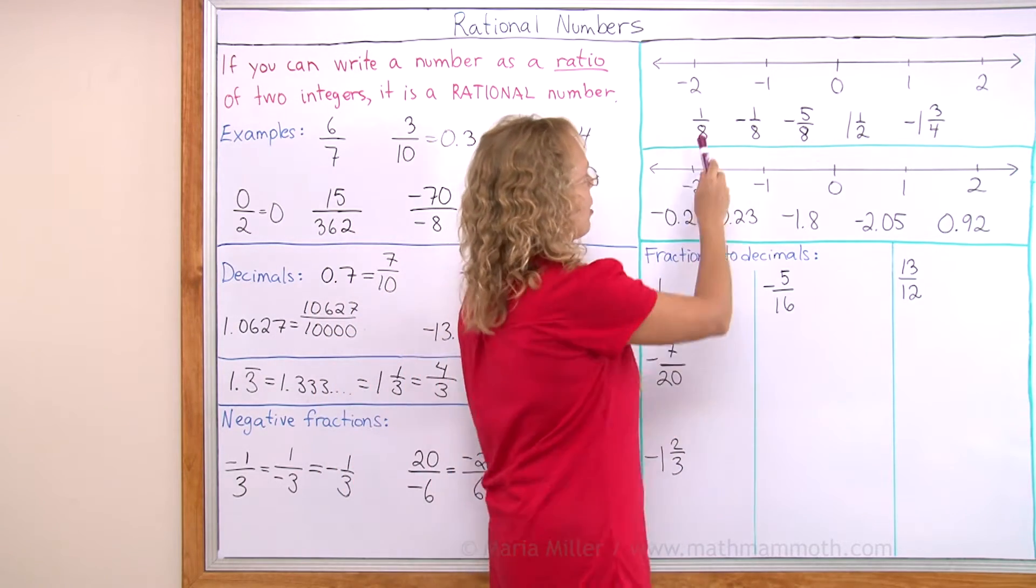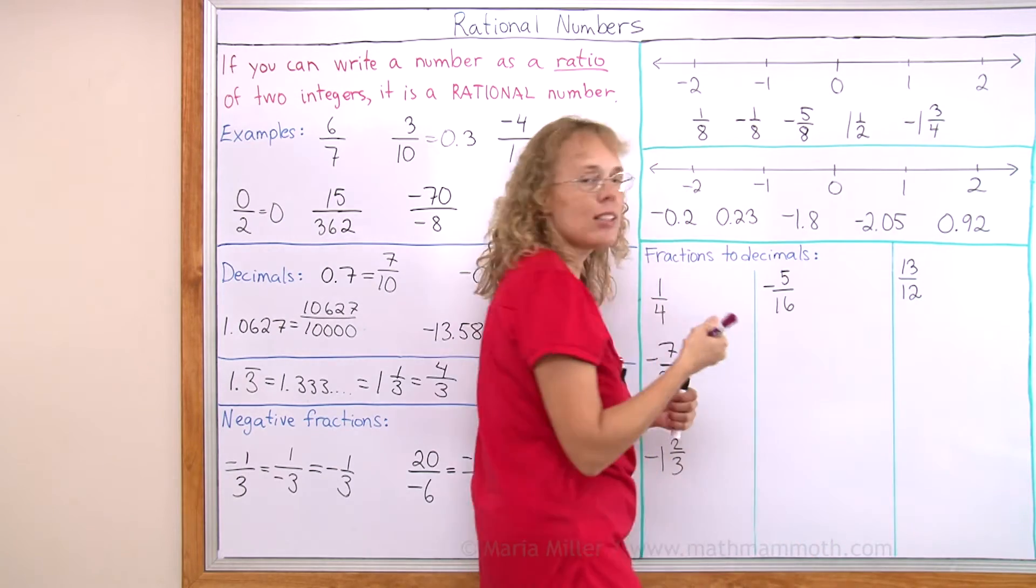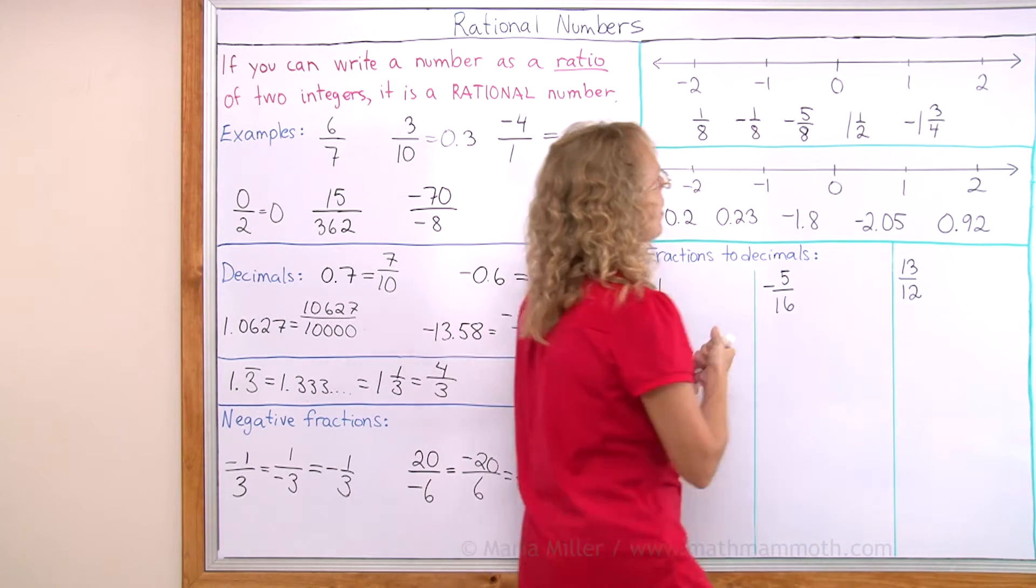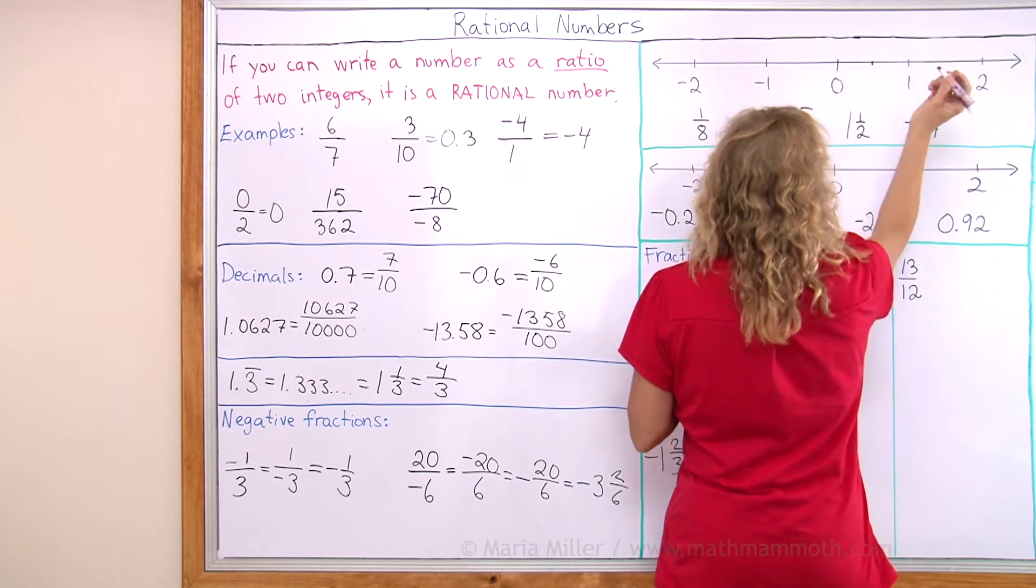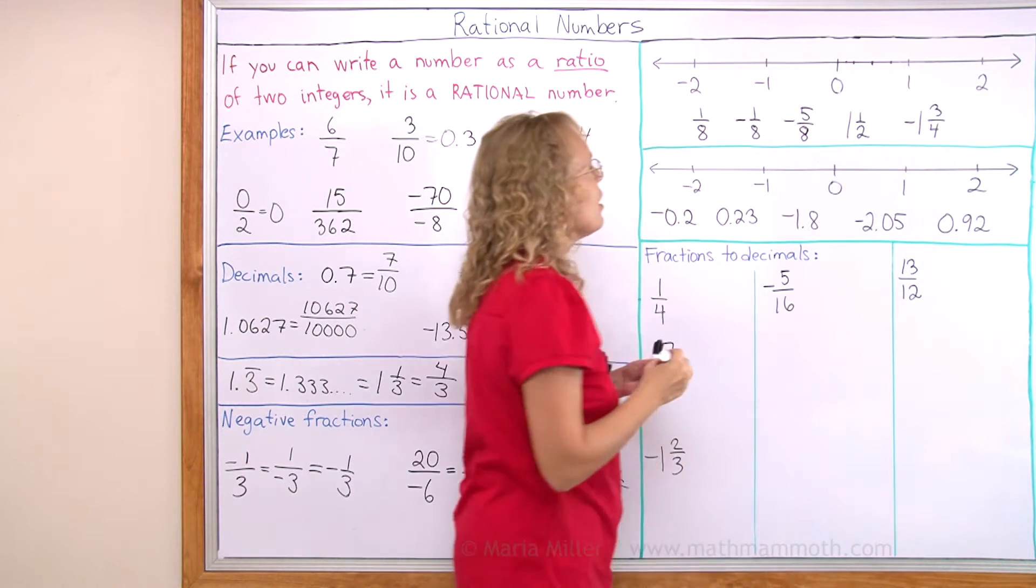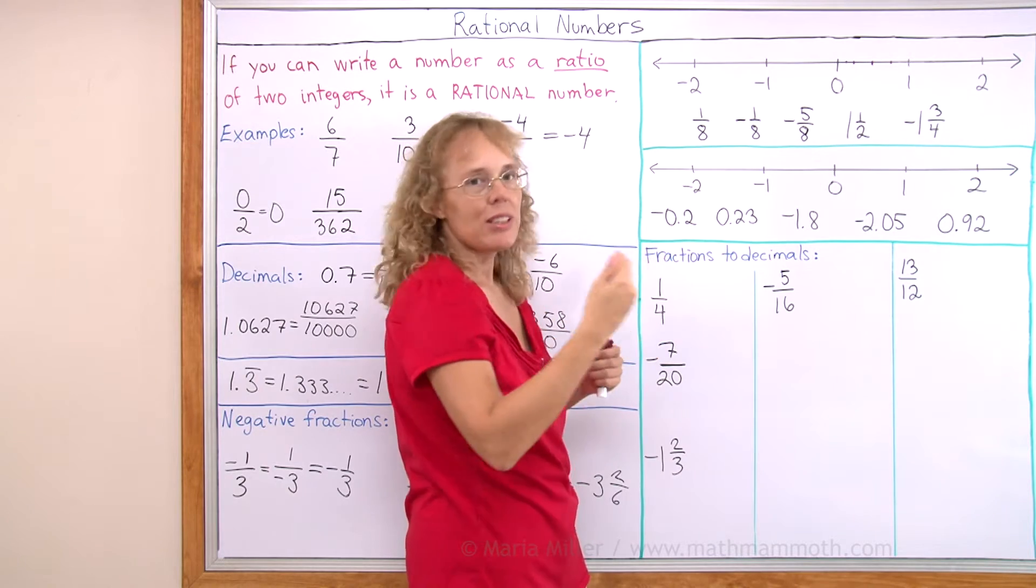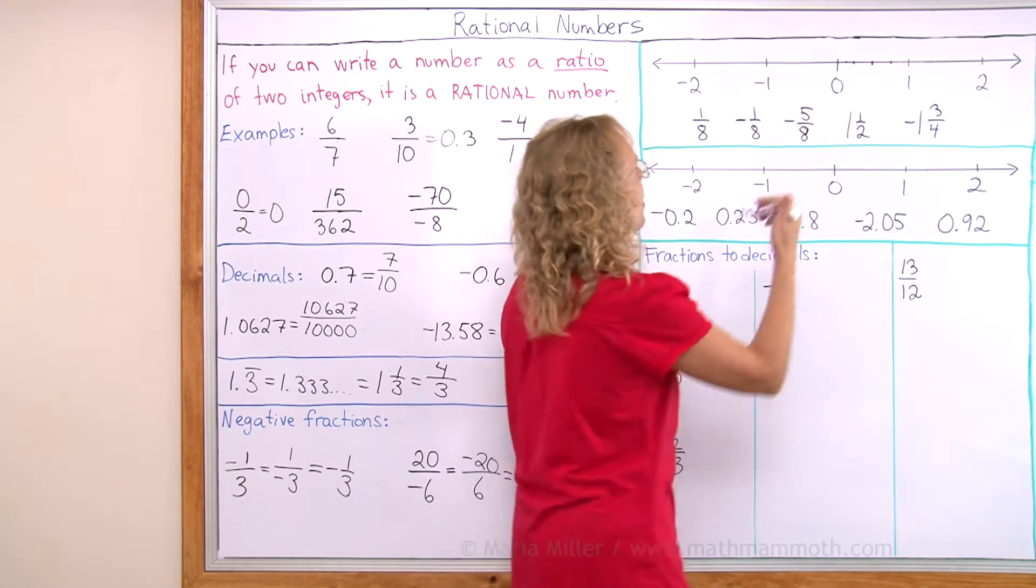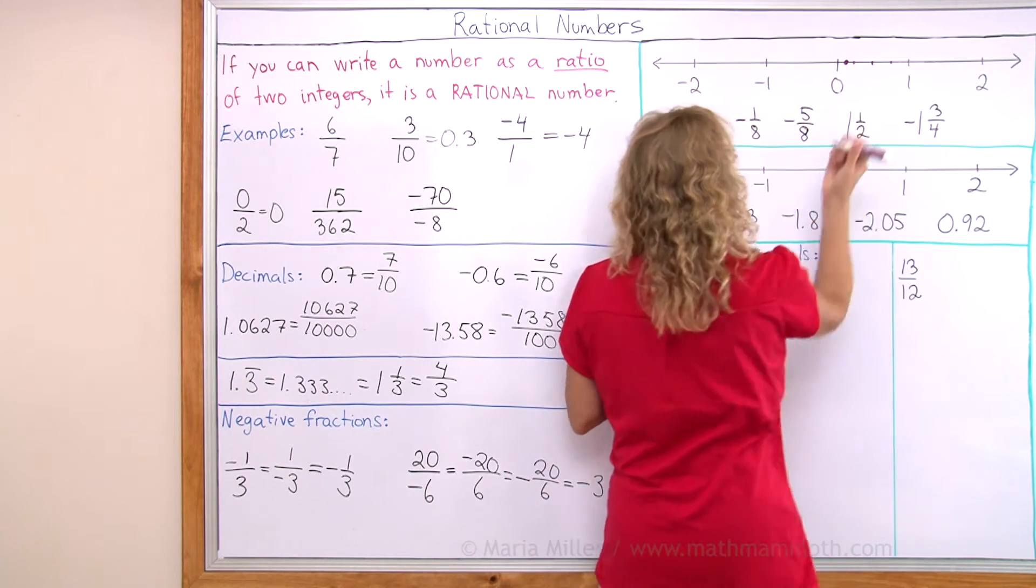So to plot 1/8, I would have to take this here and divide it into 8 parts, right? But first into halves, and then into fourths, and then, okay, it would be the halfway point between 0 and 1/4. This here is 1/8.